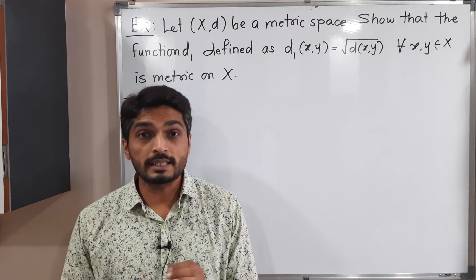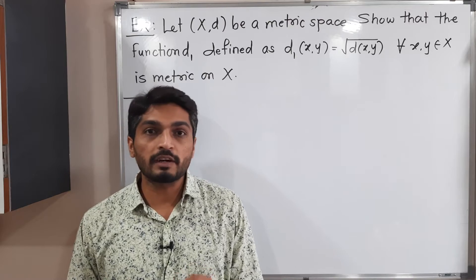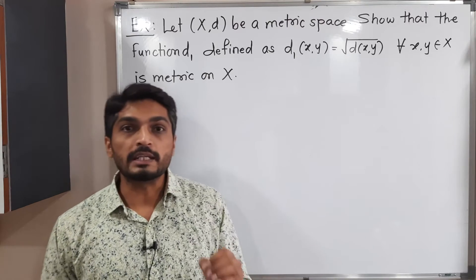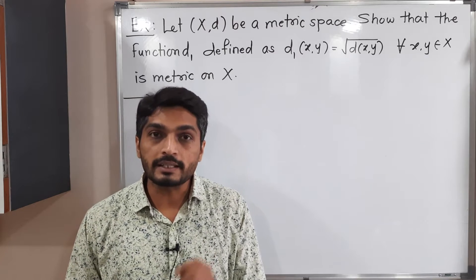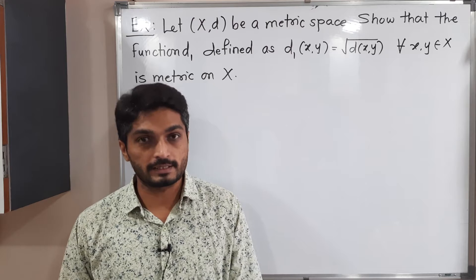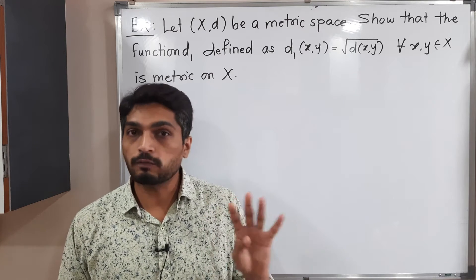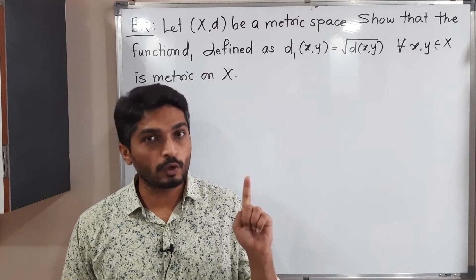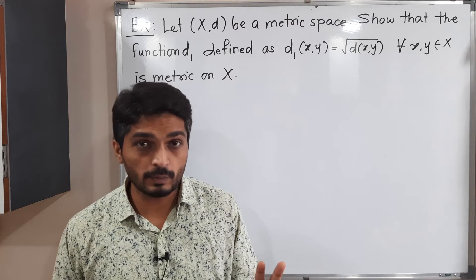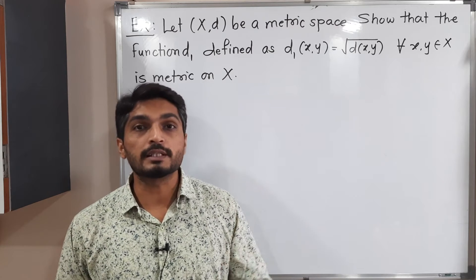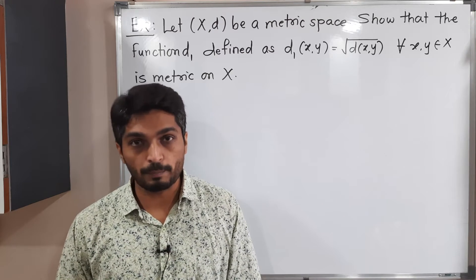Let us discuss this example. We have (X, d) is a metric space, and they have defined a function d1 in this way: d1(x,y) is equal to square root of d(x,y). We have to prove that d1 is also a metric on X. We can say that d1 is a metric on X when it satisfies all four conditions: non-negativity, d1(x,y) = 0 if and only if x = y, symmetry, and triangle inequality. Let us start to prove that d1 satisfies all four properties.